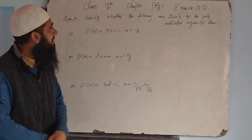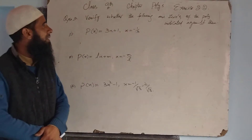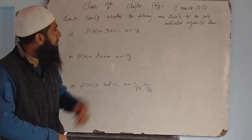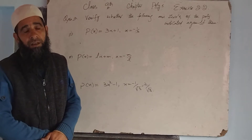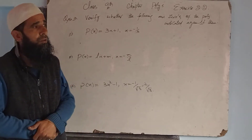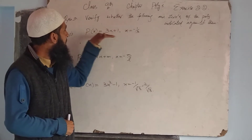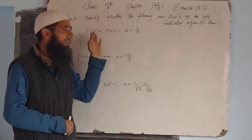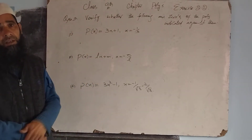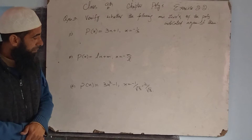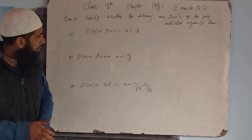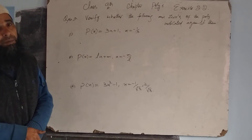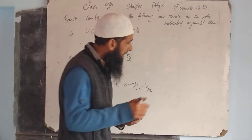First understand the question: verify whether the following are zeros of the polynomials. We have polynomials given and against them X's values. We will see the question of these polynomials against X's values.